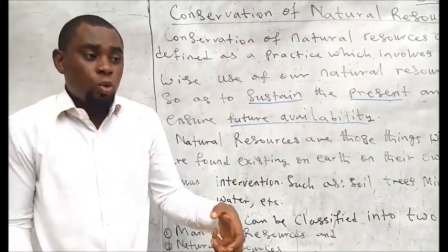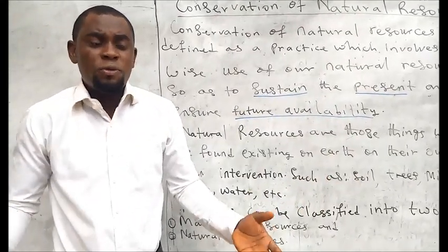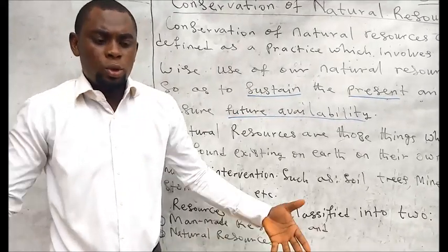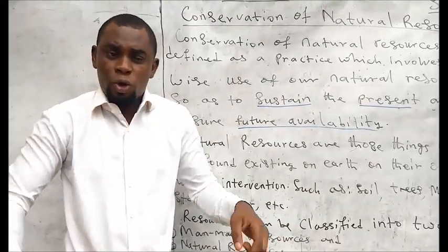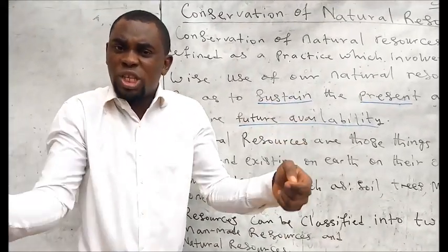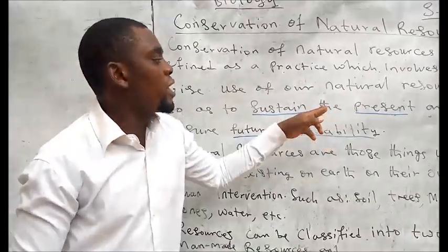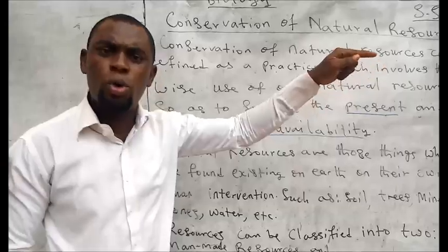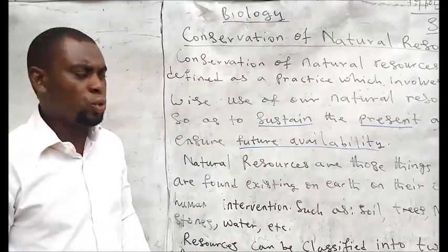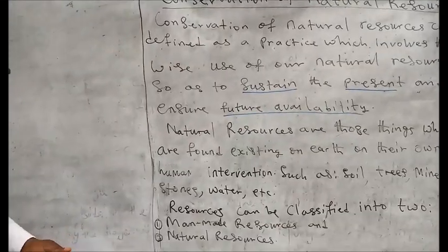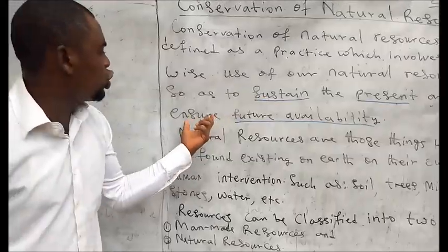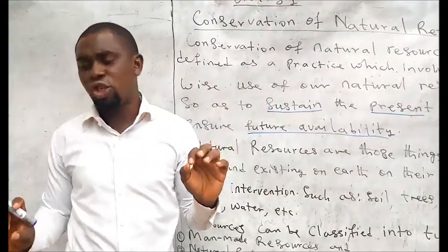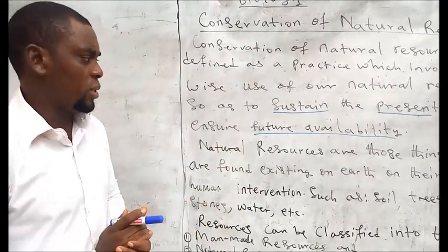If you don't make wise use of the available resources, they will not even be enough for us in the present. You don't just think for the present — you think for the present and equally make room for the future. That is what makes you a responsible human being, and that is why we talk about ensuring for the future.